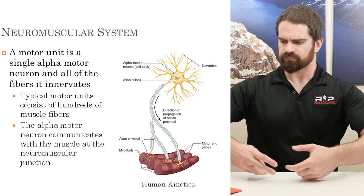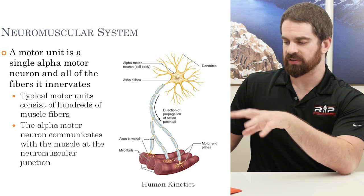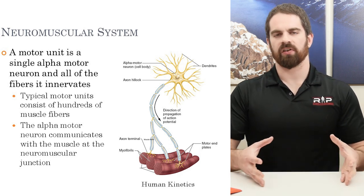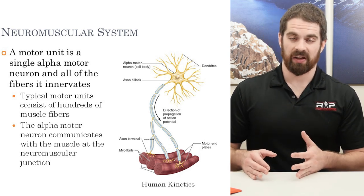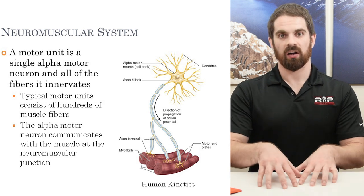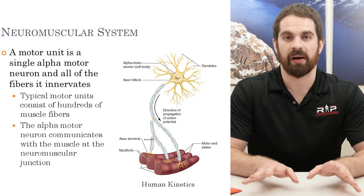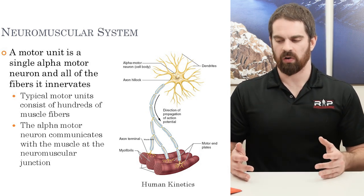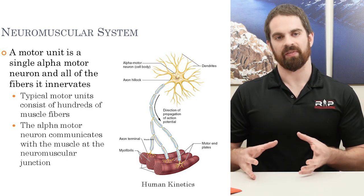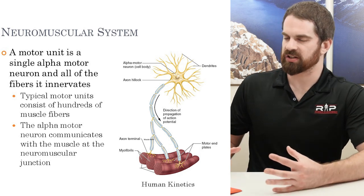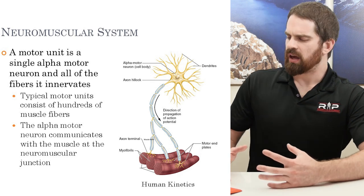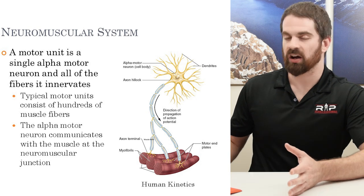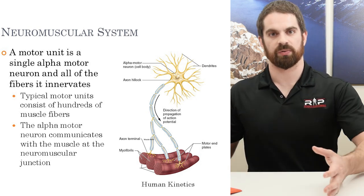A motor unit is a single alpha motor neuron and all the muscle fibers it innervates. One alpha motor neuron might innervate hundreds of individual muscle fibers — a huge amount of branching. The alpha motor neuron communicates with the muscle at the neuromuscular junction. One cool long-term training adaptation is continued branching of that alpha motor neuron, innervating more muscle fibers or different regions within the muscle.